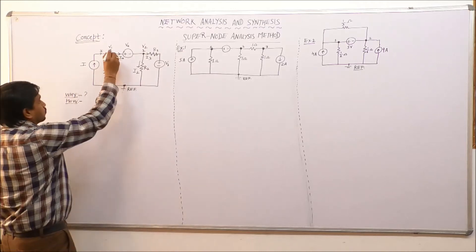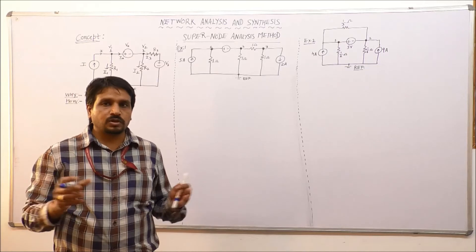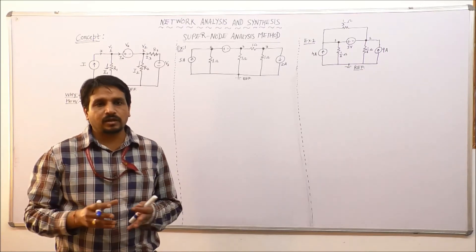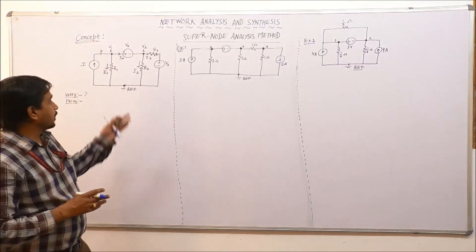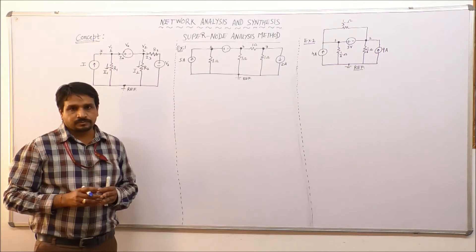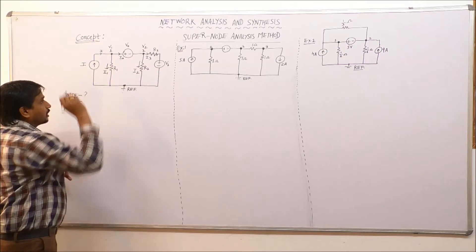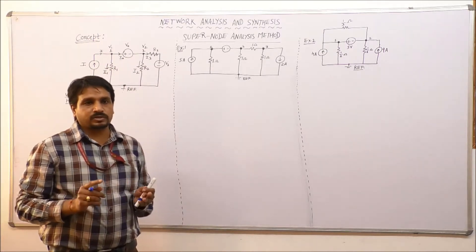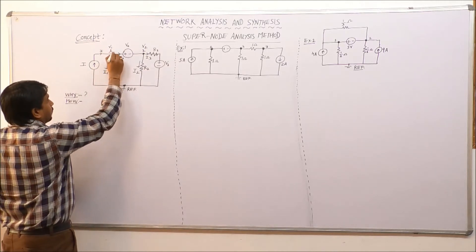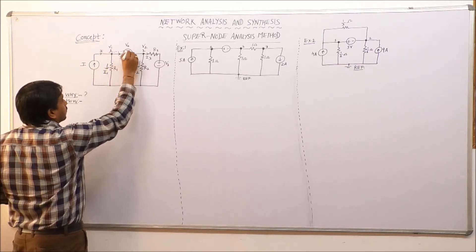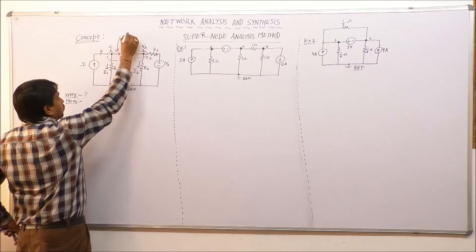Super node is a theoretical concept in which we combine two nodes together — we consider them as a single node. The voltage source connected between these two nodes is, for the time being, ignored. Instead of writing individual KCL equations for node 1 and node 2, we consider them as a single node and write one KCL equation for this combined super node. I denote this super node by dotted lines, combining node 1 and node 2.